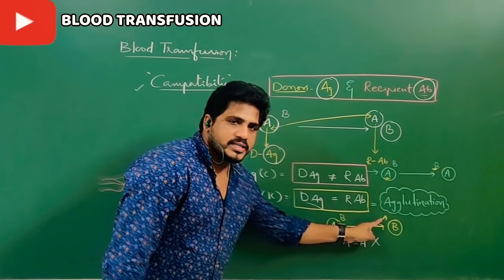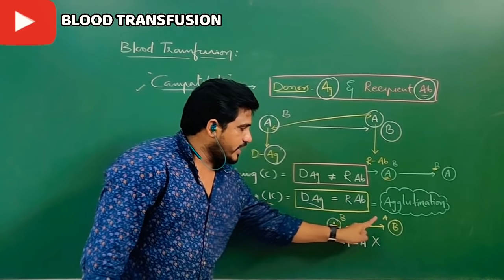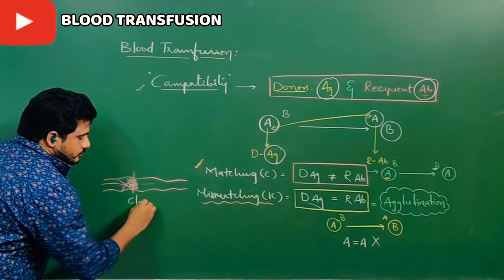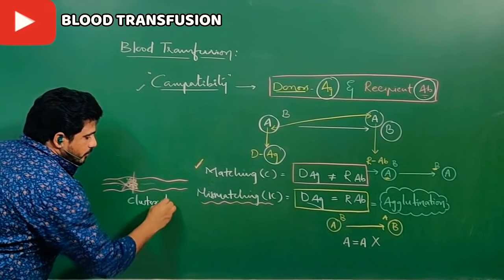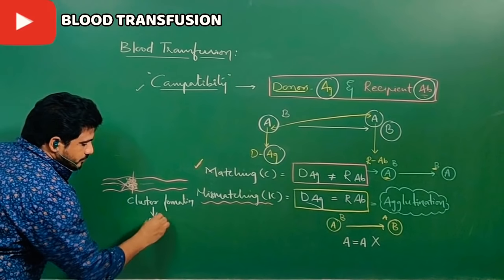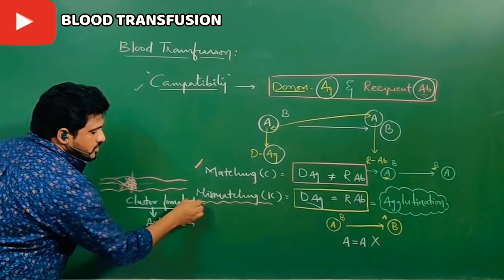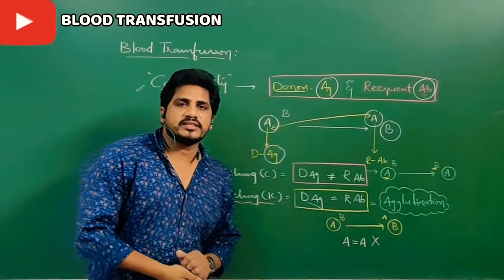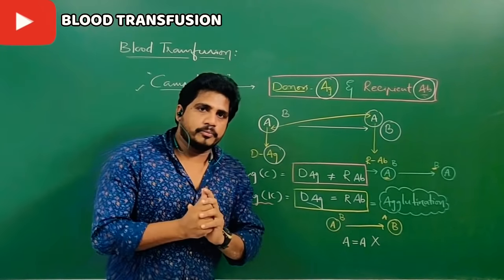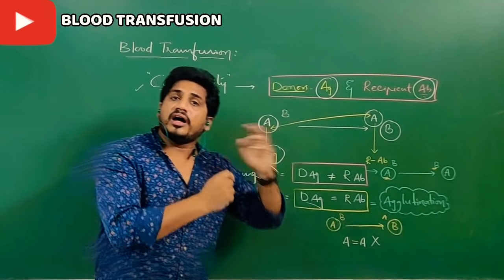When the compatibility of antibody and antigen is set, clusters form — cluster formation results in agglutination. The clusters form because of mismatched blood groups. Now let us go to the next level — checking whether different blood groups match or mismatch with each other. Let us take the A blood group person as the donor and check compatibility with A, B, AB, and O blood groups.